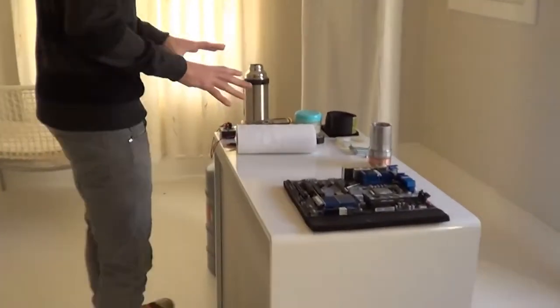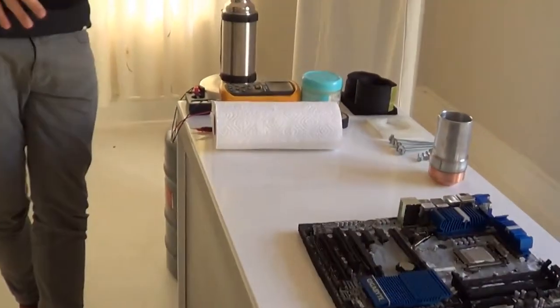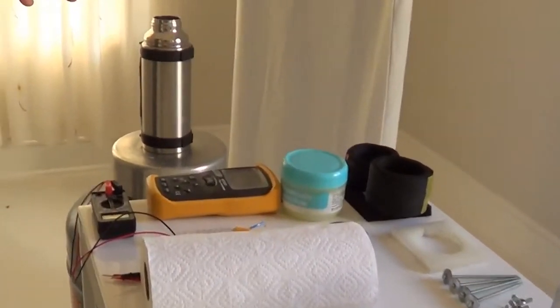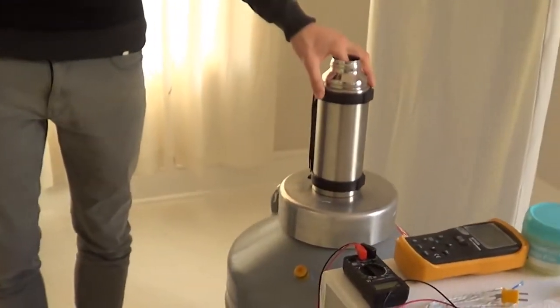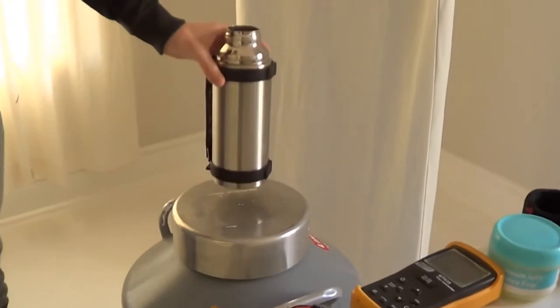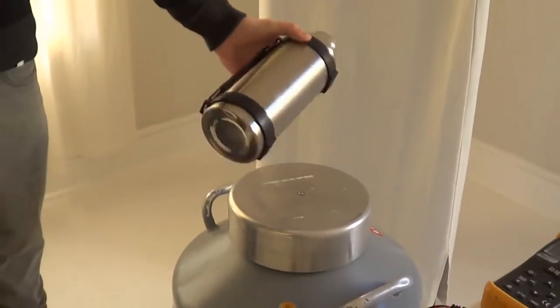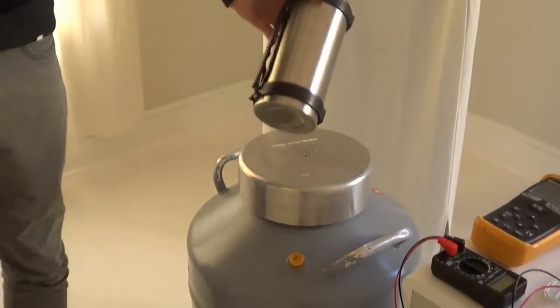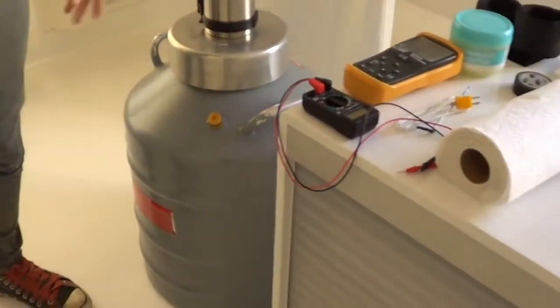Over on this table we have the bare essentials, everything you will need to start your first sub-zero overclocking session. Over here we have the liquid nitrogen which will be your main cooling component, and you can throw it into a coffee flask or any kind of flask like this.